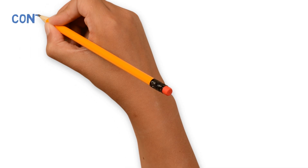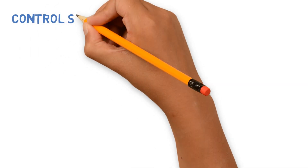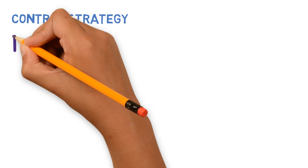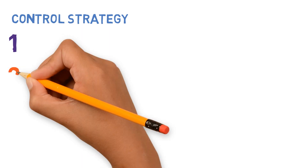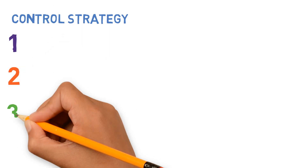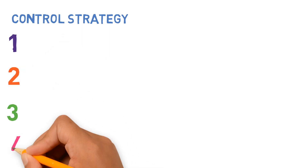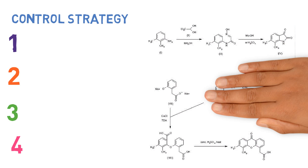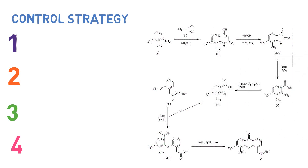ICH M7 states that a control strategy must be defined for each potentially mutagenic impurity. There are four options of control strategies, which depend on the stage where you would like to control the impurity.